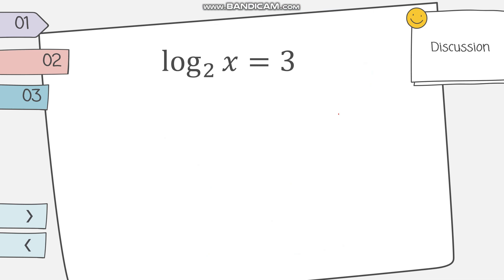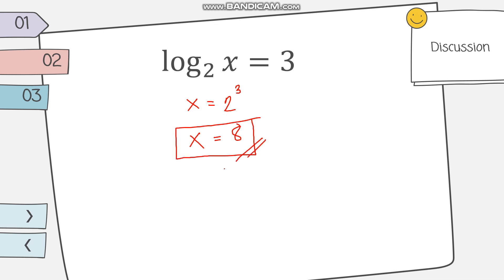Now for logarithms. Given logarithm of x base 2 equals 3, we transform it into exponential form. The argument is x, the base is 2, and the exponent is 3, so x equals 2 raised to 3. Simplifying, 2 raised to 3 equals 8, so x equals 8.